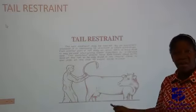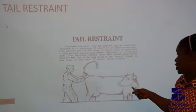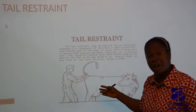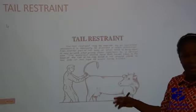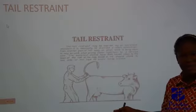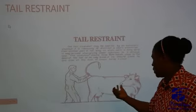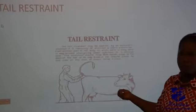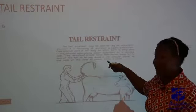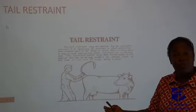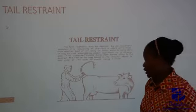This is tail restraining — very, very important, most especially if you are going to carry out artificial insemination. Artificial insemination is where you put the spermatozoa into the female animal. You have to restrain the tail for you to be able to perform this operation perfectly.